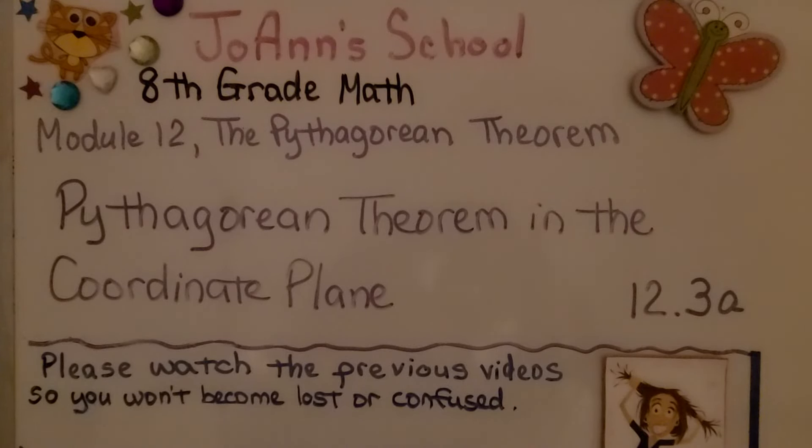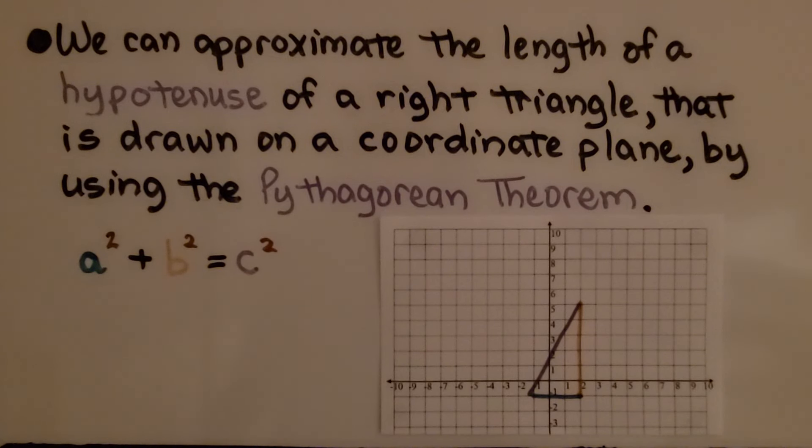Lesson 12.3a: Pythagorean Theorem in the Coordinate Plane. We can approximate the length of a hypotenuse of a right triangle that is drawn on a coordinate plane by using the Pythagorean Theorem, a squared plus b squared is equal to c squared.